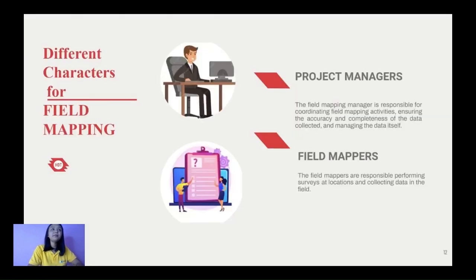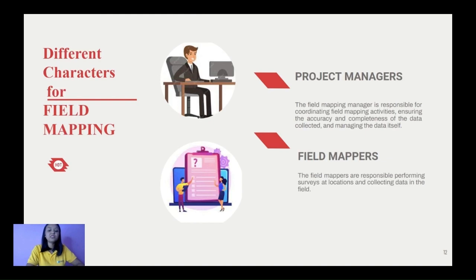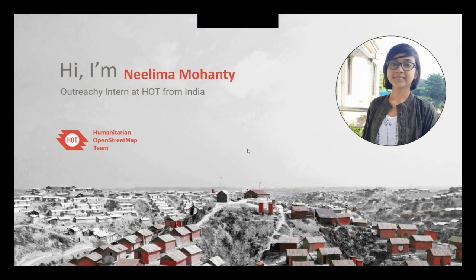The Field Mapping Tasking Manager is a project owned by HOT and it aims to provide a tool to coordinate field mapping activities in various open mapping campaigns. FMTM is not just a mobile application for data collection — it is a full-fledged mobile and web application that can be used by different users. For example, project managers can use FMTM to coordinate their field mapping activities, and field mappers — the people who actually go to the field and collect datasets — can also use the FMTM project.